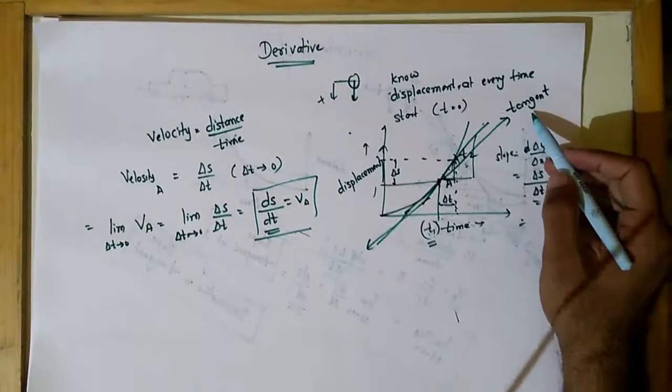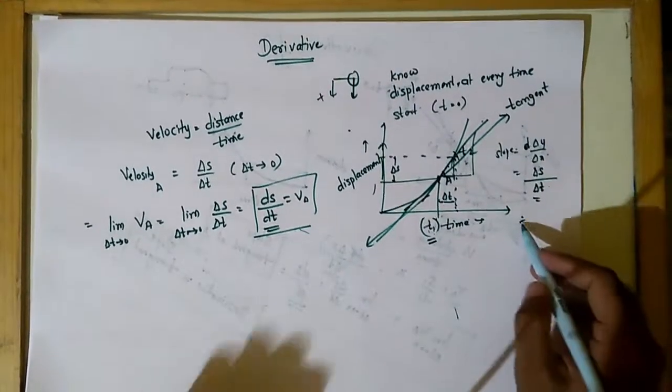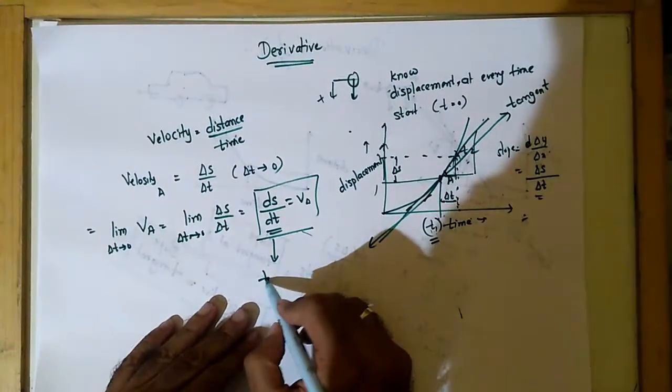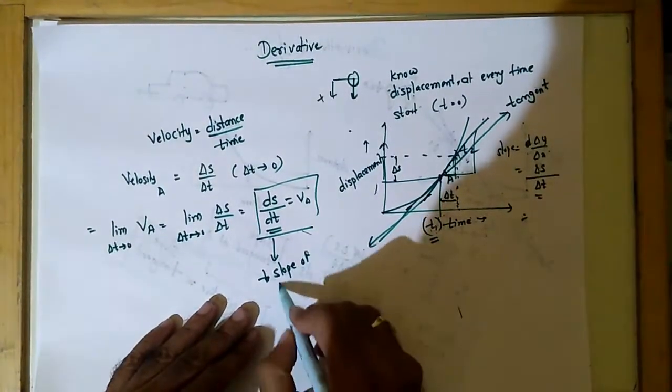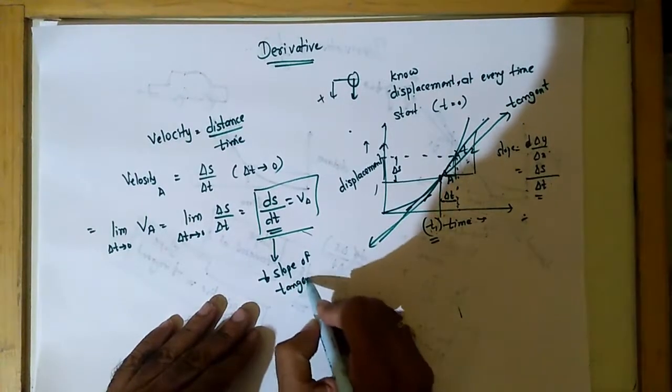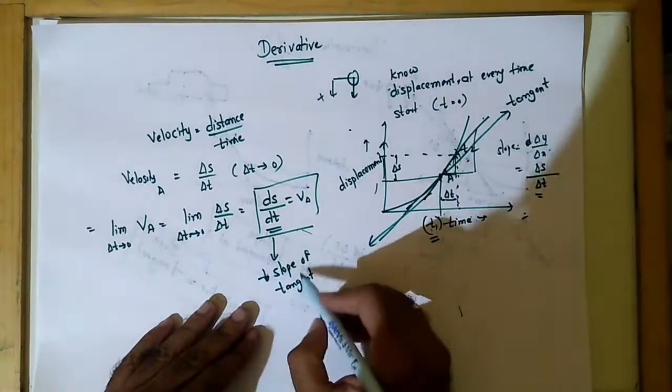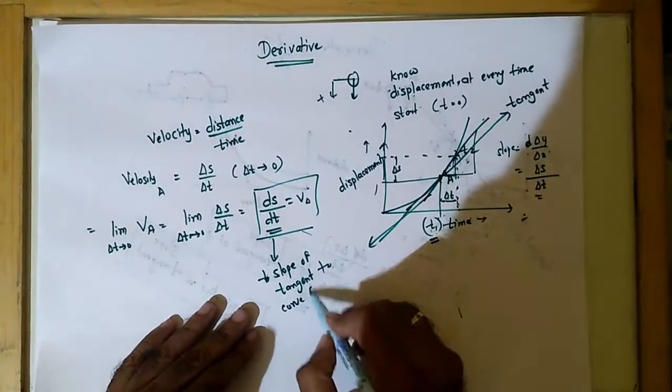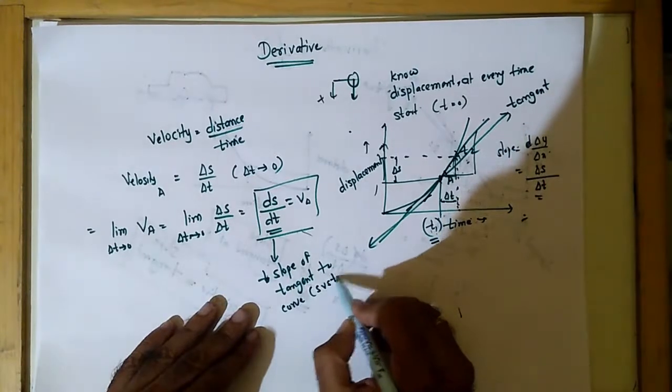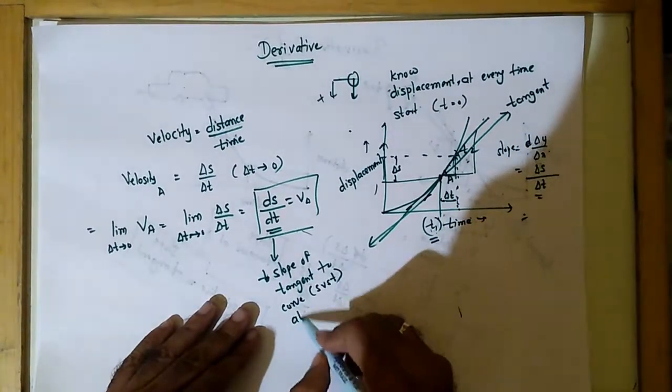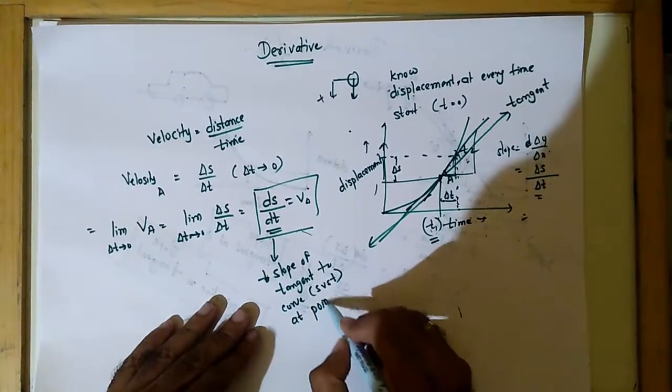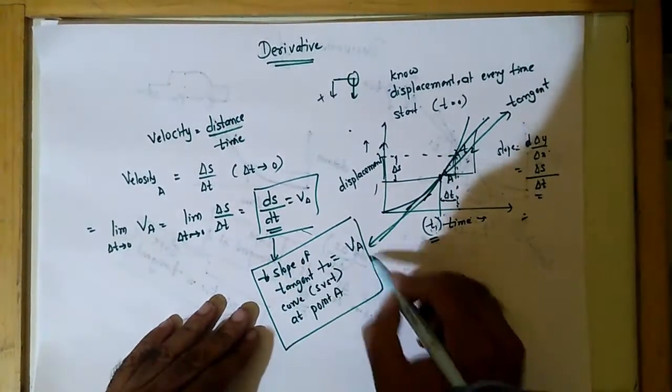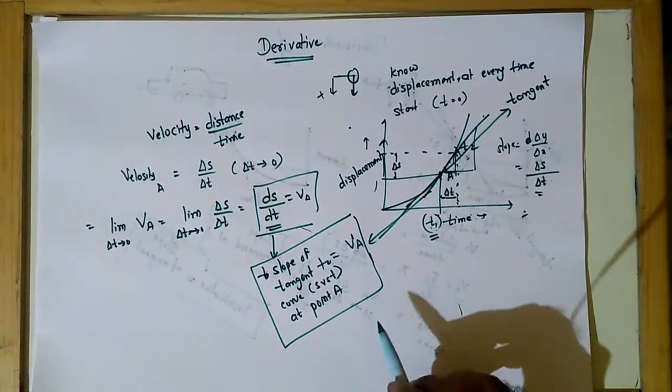If you don't know what is the tangent, please see my other video. So this value of tangent will be the slope of tangent to the curve of s versus t at point A. This is velocity at t. This is the graphical meaning or physical meaning of a derivative.